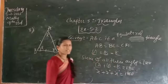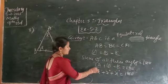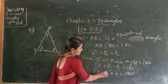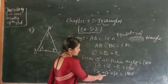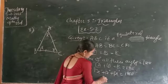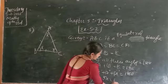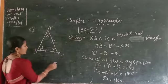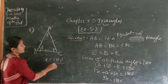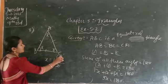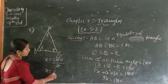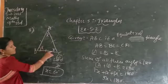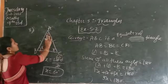Adding the terms: 1X plus 1X gives 2X, and 2X plus 1X gives 3X. So 3X is equal to 180 degrees. What is the value of X? X equals 180 degrees divided by 3, which gives X equals 60 degrees.